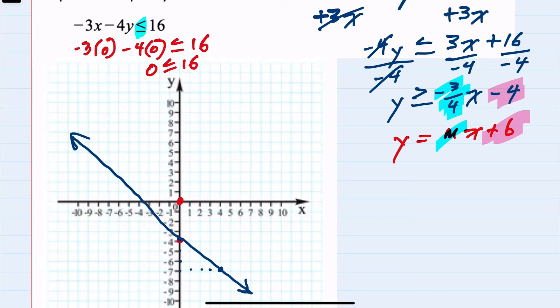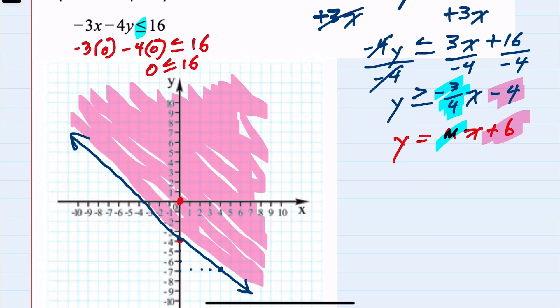When a test point is true, we shade on that side of the line—the test point side. If we had gotten a false statement, we'd shade opposite the test point.